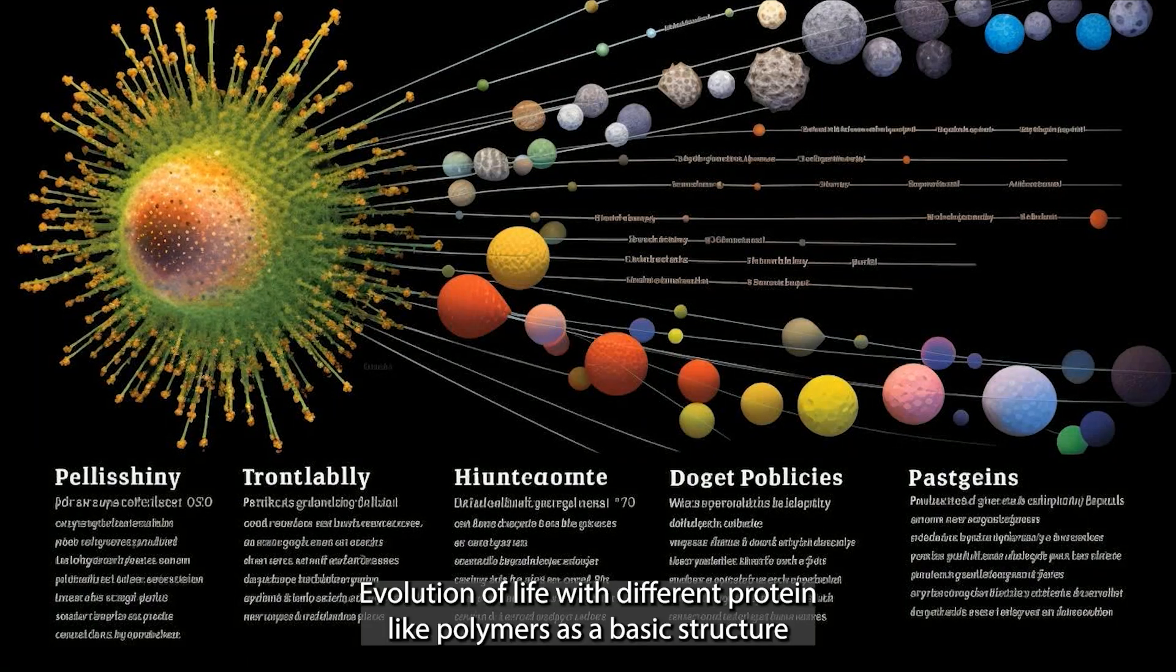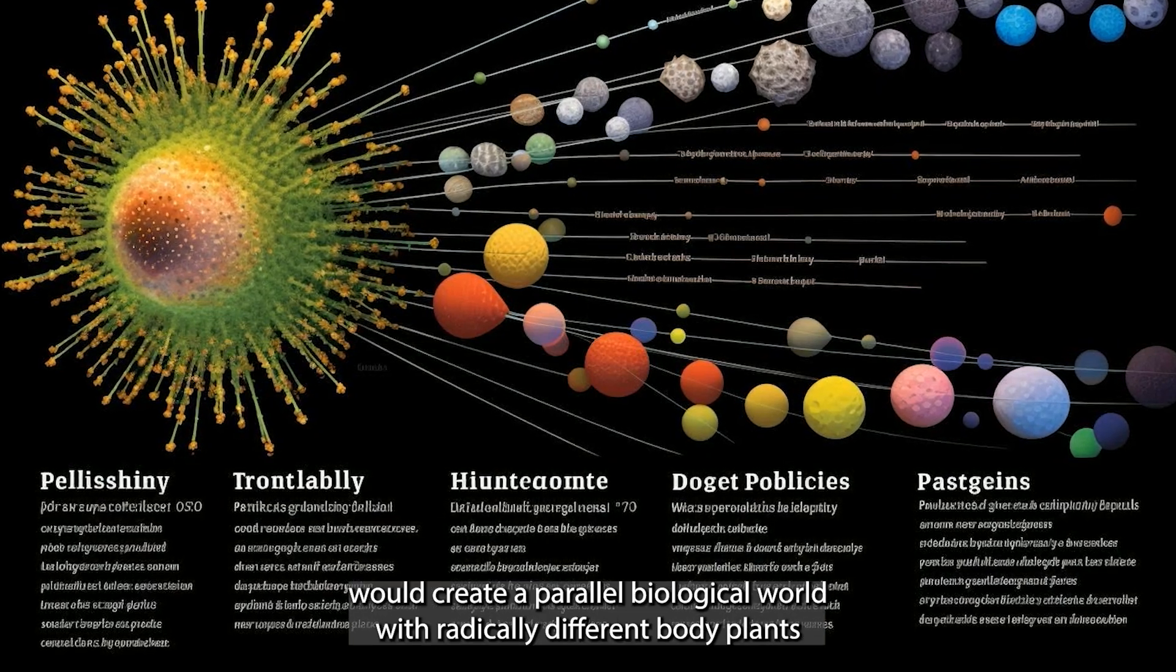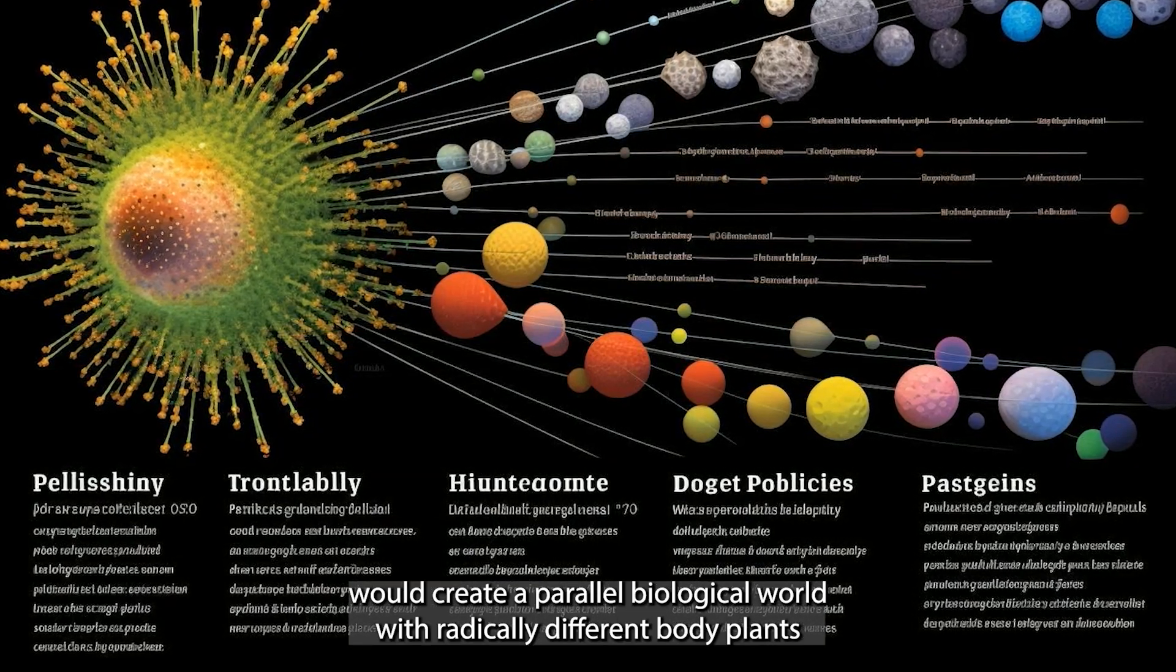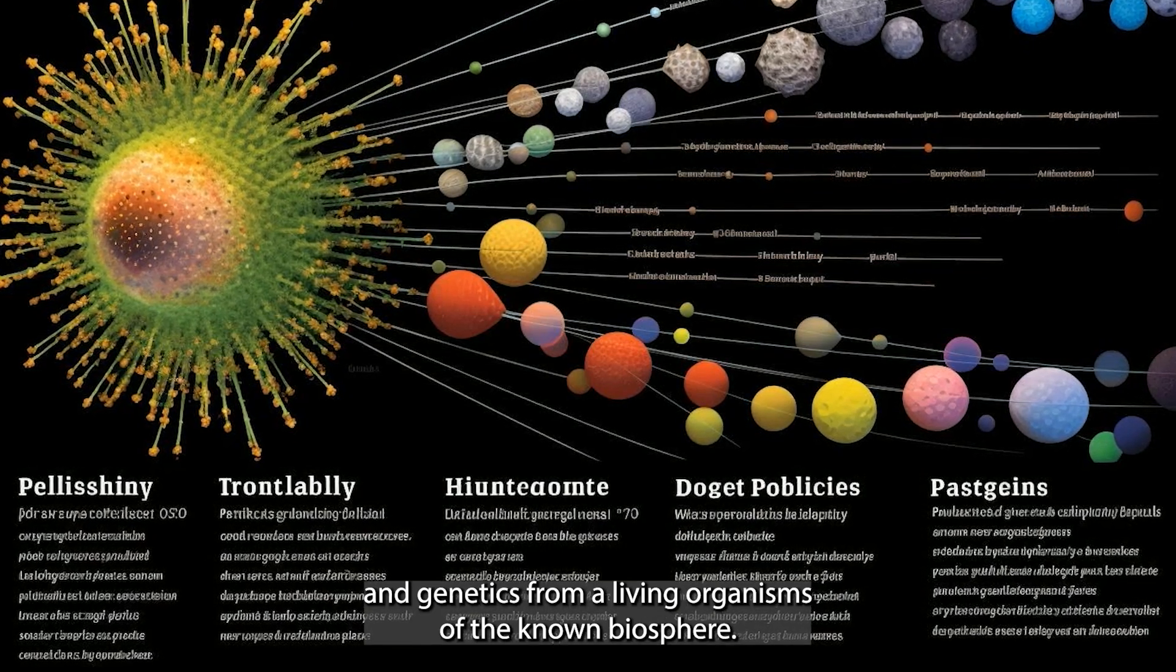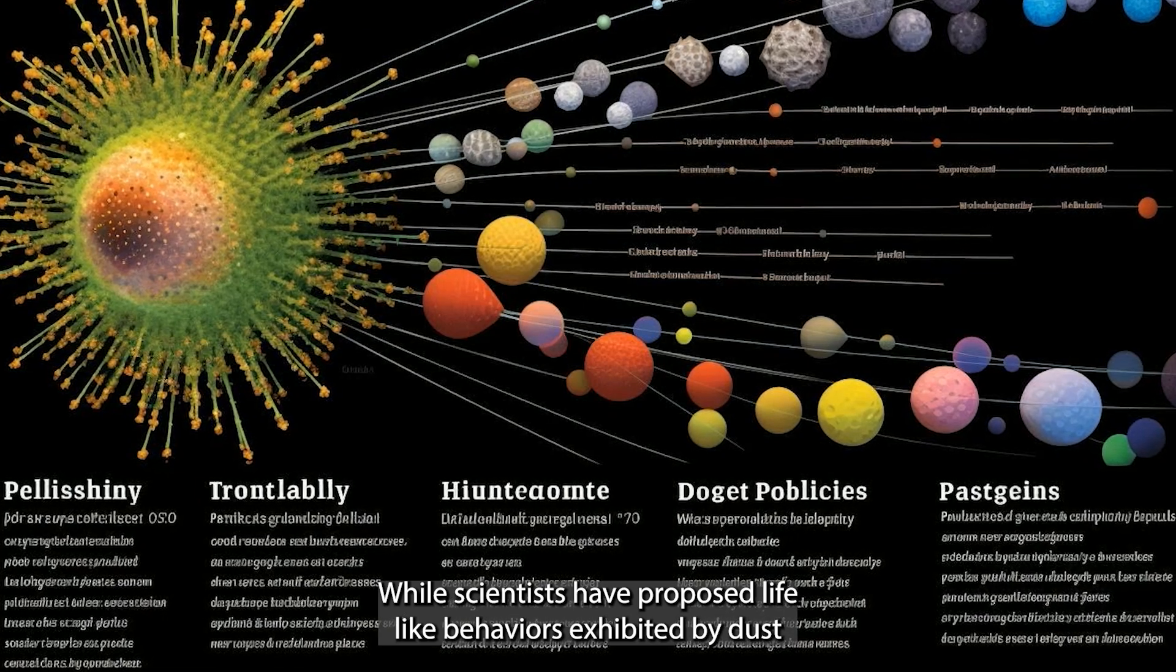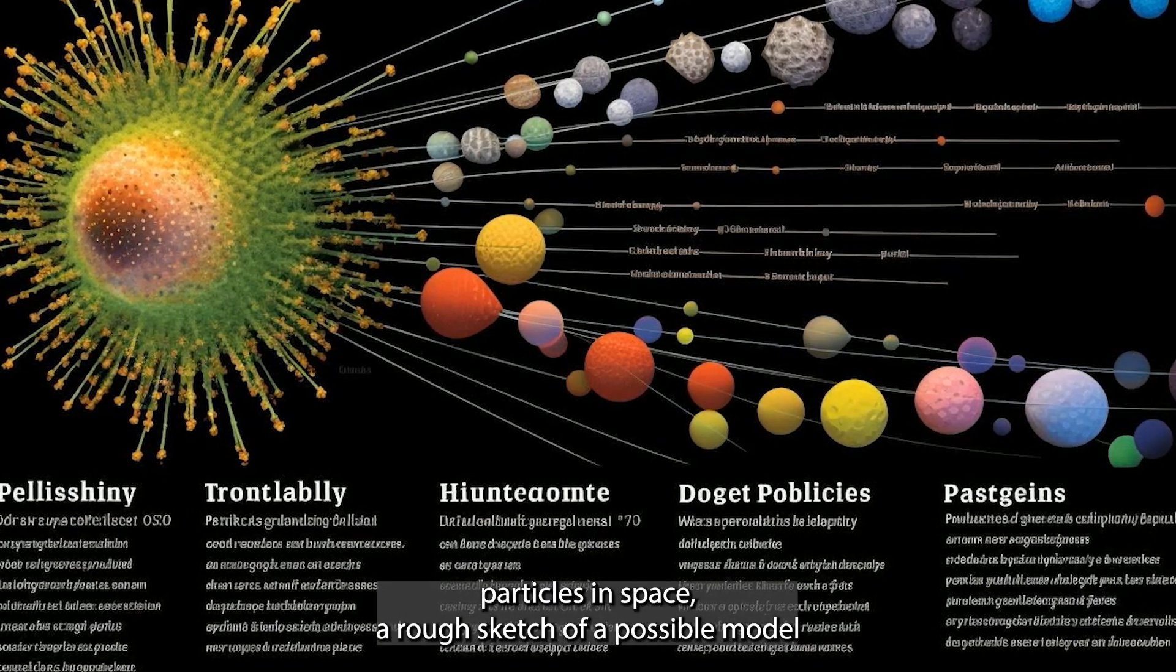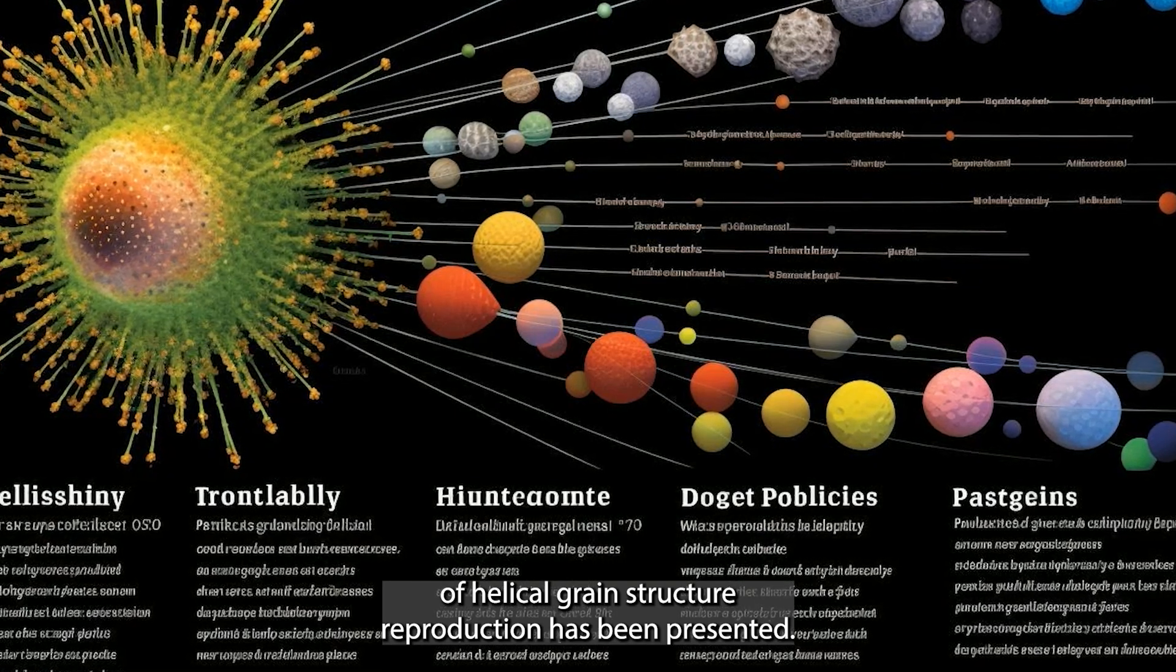Evolution of life with different protein-like polymers as a basic structure would create a parallel biological world with radically different body plans and genetics from the living organisms of the known biosphere. While scientists have proposed lifelike behaviors exhibited by dust particles in space, a rough sketch of a possible model of helical grain structure reproduction has been presented.